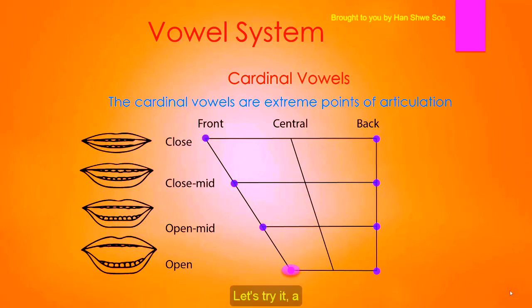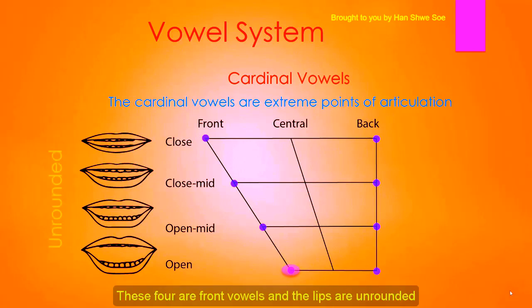Aaa. To compare all four: 'ee, ee, ee, aaa.' These four are front vowels, and the lips are unrounded.